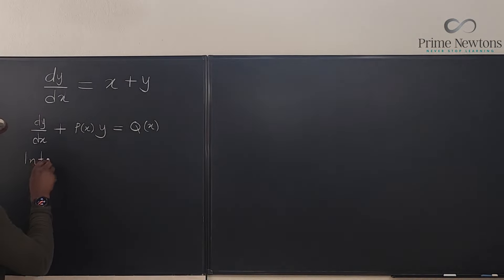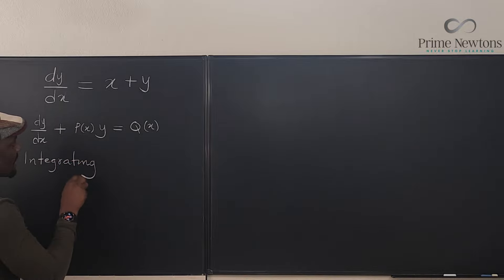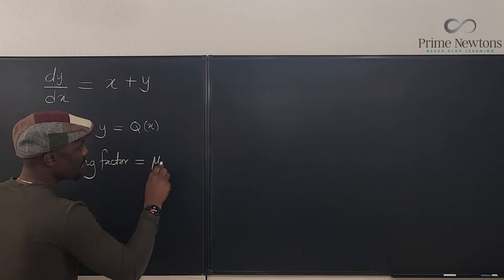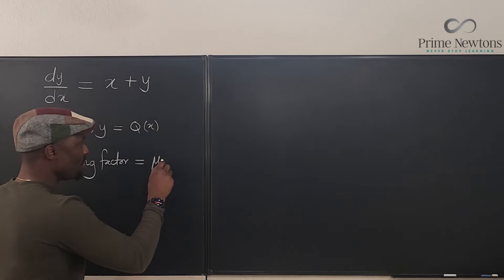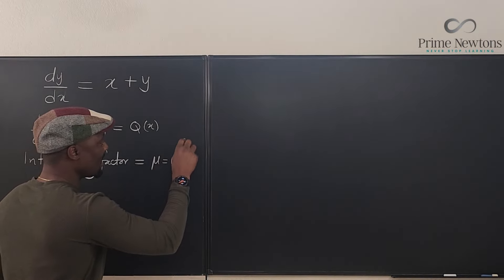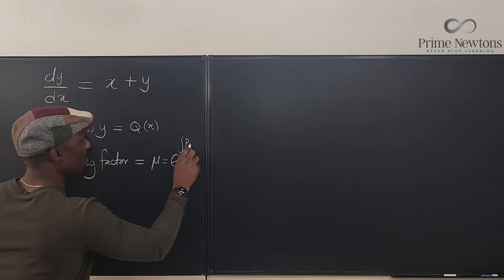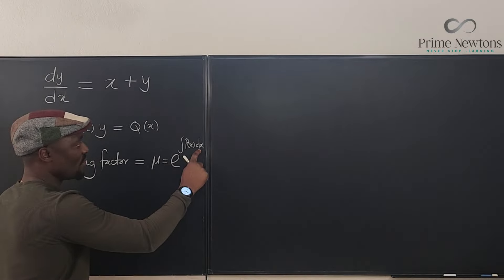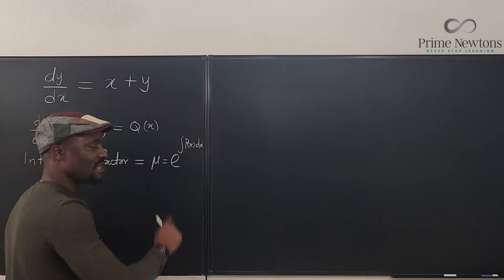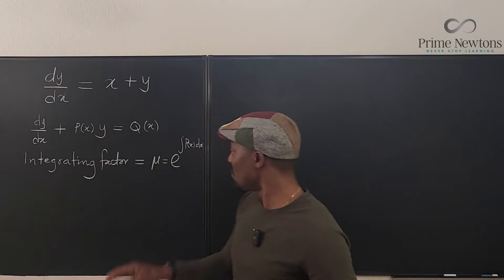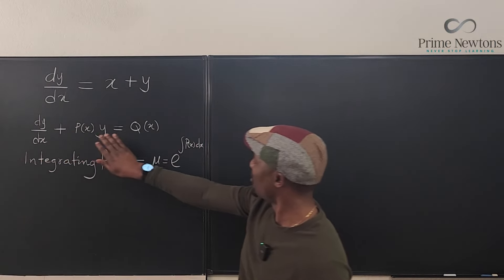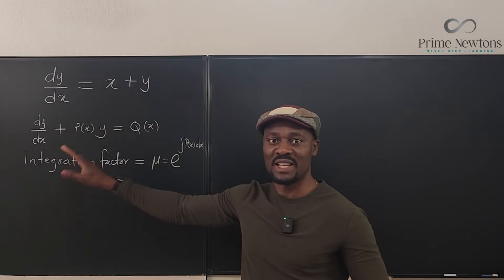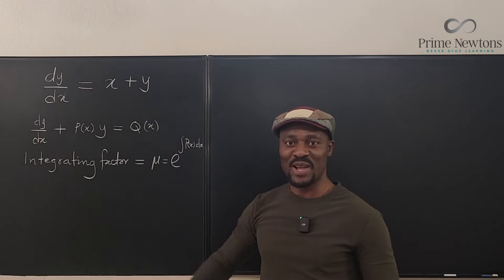So we have the integrating factor, and that equals mu. How do you compute mu? Your mu is equal to e raised to the power of the integral of P(x) dx. So if you take P(x) and integrate it with respect to X and make it the exponent of e, then you have found your integrating factor. If you use this value to multiply through the equation, it becomes a separable differential equation and you can separately integrate both sides.